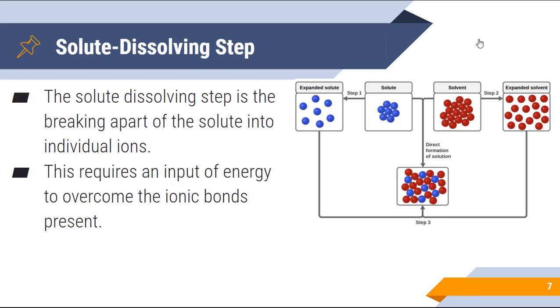So the first step is the solute dissolving step. So in order for a solution to occur, the solute has to break apart the solute into its individual ions. Now if you think about it, you are breaking apart chemical bonds. When you break chemical bonds, you have to put energy into the system. Breaking of bonds is an endothermic process.